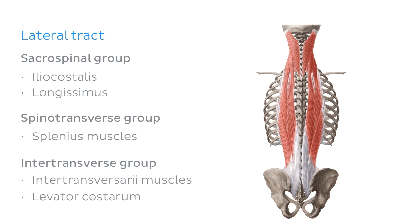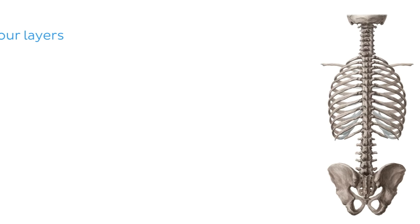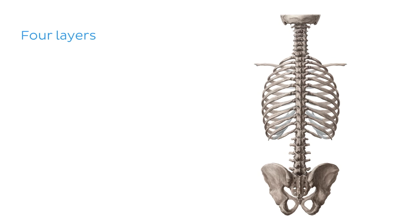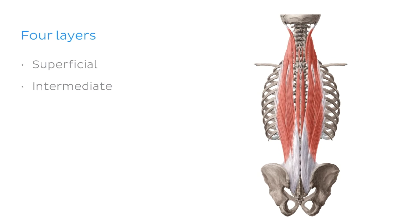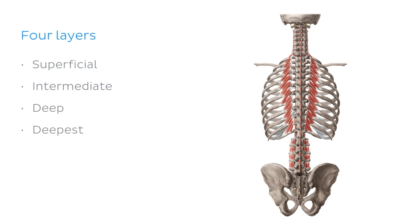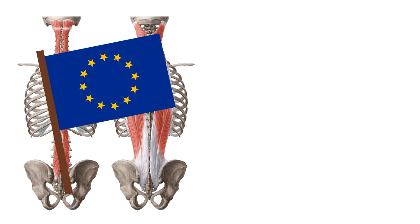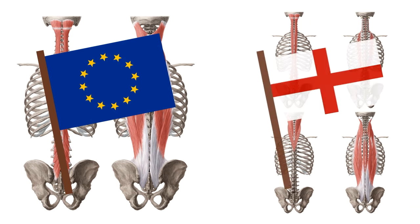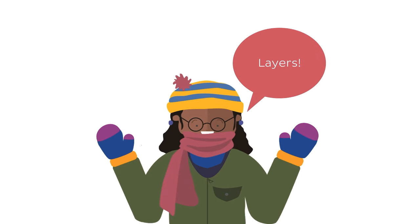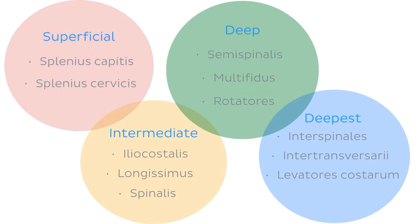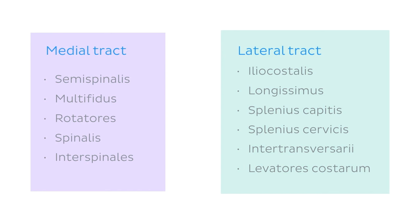The other way of approaching the division of deep back muscles is by dividing them into layers. This division gives us four layers: a superficial layer, an intermediate layer, a deep layer, and finally the deepest layer. The division into tracts is usually found in some European textbooks, while the division into layers is usually found in English language textbooks. In this tutorial, we're going to be using the division into layers, as it's more commonly used in popular textbooks. But don't worry — if you prefer learning via tracts, the attachments, innervation, and functions remain the same; you can just regroup them in your notes as we work through the muscles.